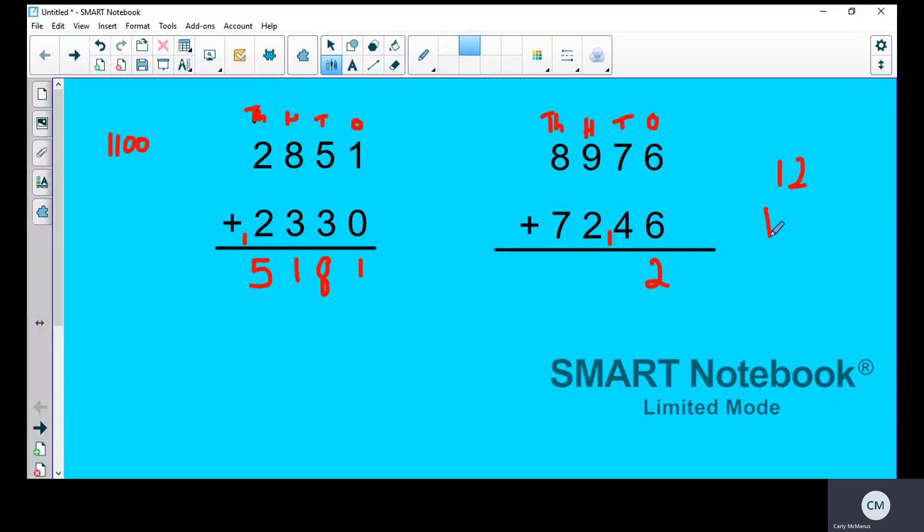So twelve tens is 120. You don't need to do this at the side, but if you want to that's fine. So look, you keep the two in the tens column because it's twenty, and you rename the other tens, which is ten tens which makes a hundred, in the hundreds column.